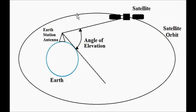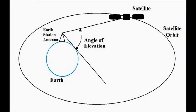The angle of elevation continuously keeps changing with respect to the position of the satellite at different points in the orbital path. So these are the two concepts discussed here: the angle of inclination, with its two definitions, and the angle of elevation.